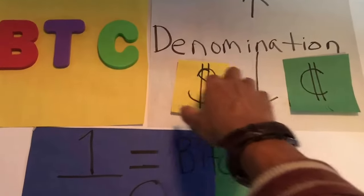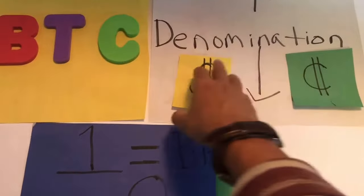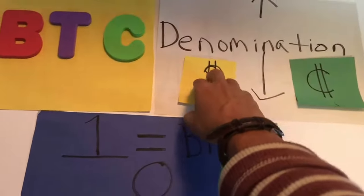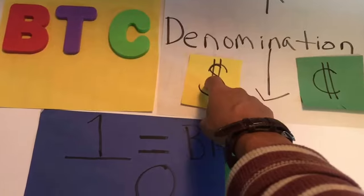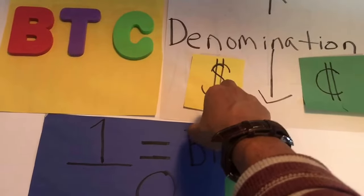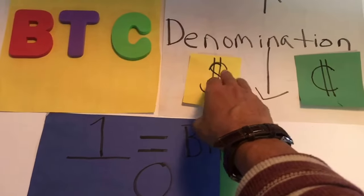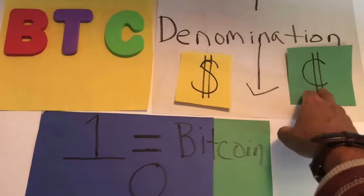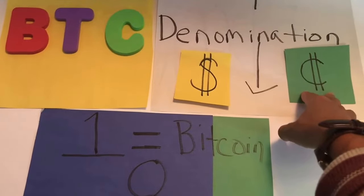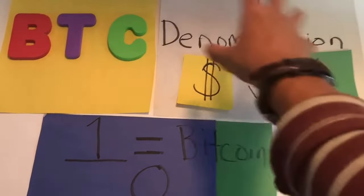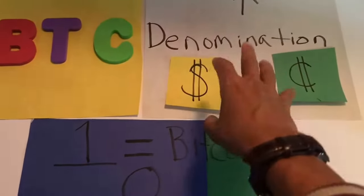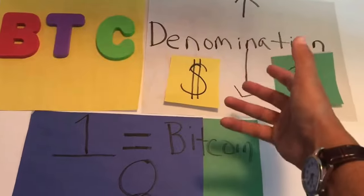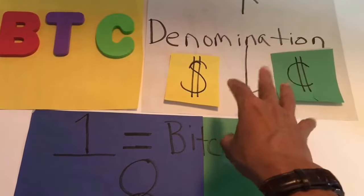In the dollar system, you have fives, tens, twenties, hundreds, then thousands, ten thousands, a hundred thousand, and a million. Going down, you have pennies, nickels, dimes, and quarters. I'm using USD because it's both my local currency and the current global reserve currency.